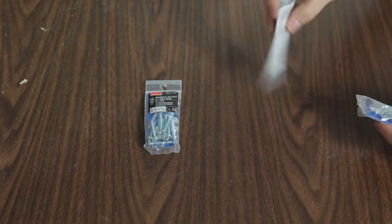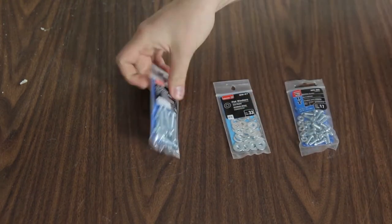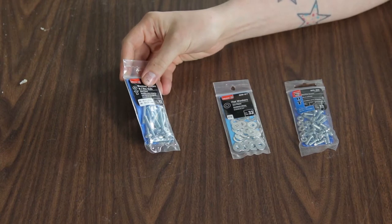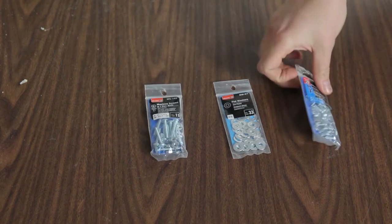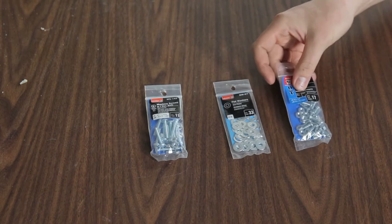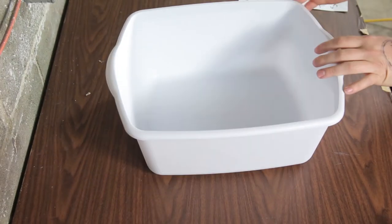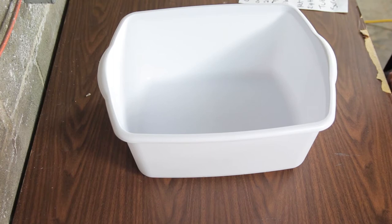Some random nuts and bolts. These are number 8-32, one and a quarter inch machine screws. This is a number 8-32, half inch machine screw. And some washers. And of course you're going to need your plastic dish tub. This is from Walmart and this is $2.97.